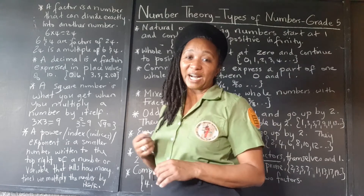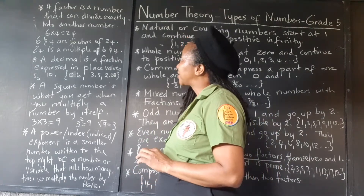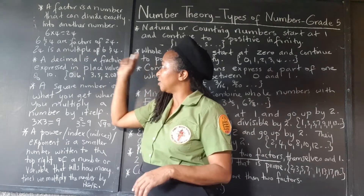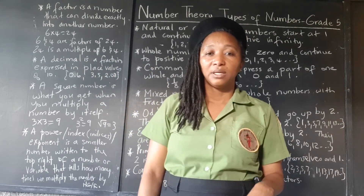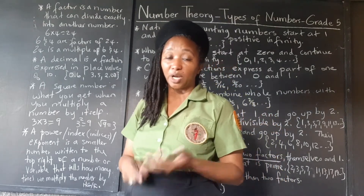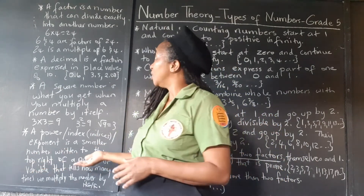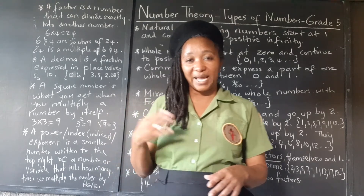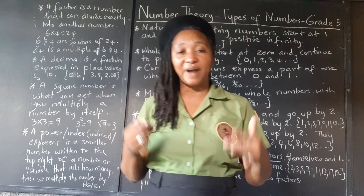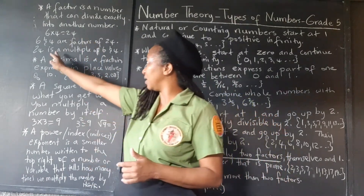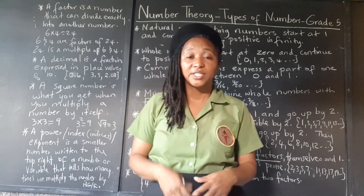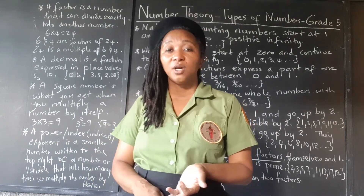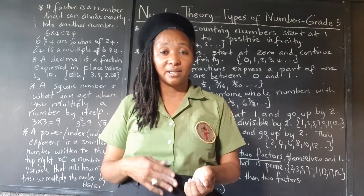So let's look now at factors. What do we mean by factors? A factor is a number that can divide exactly into another number. So if 6 times 4 gives 24, then 6 can go into 24 and 4 can go into 24 — so 6 and 4 are factors of 24. When you multiply two numbers to get another number, the two smaller ones are factors of the bigger one, and the bigger one is called a multiple of the two smaller ones. So 10 times 2 gives 20 — 10 is a factor of 20, 2 is a factor of 20, and 20 is a multiple of 10 and 2.